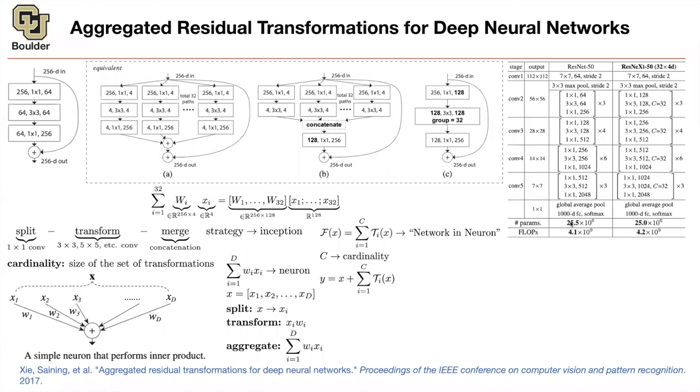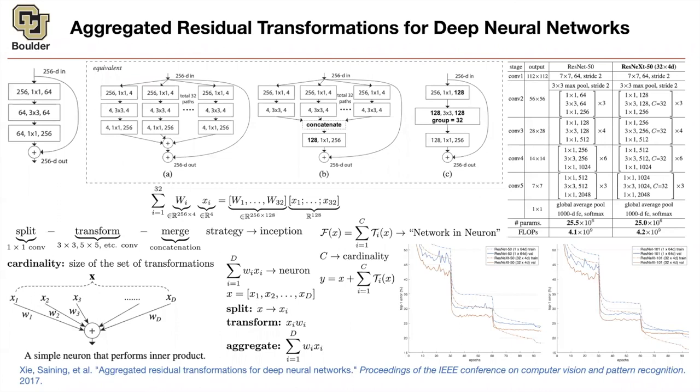And they have similar flops also. But then the difference is that ResNeXt is training much better. It's training faster and it's giving you a lower top-1 error and lower top-5 error. This is ResNet-50 and ResNeXt-50 being compared. And these are ResNet and ResNeXt-101. This one has 101 layers. Any questions?